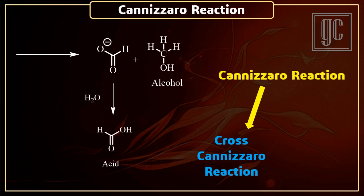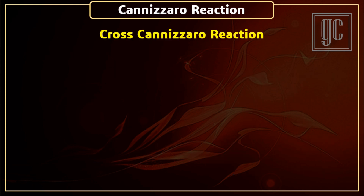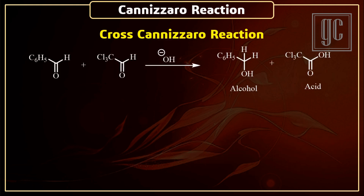On the basis of the substrate used, the Cannizzaro reaction can be classified into two categories: first is the cross Cannizzaro reaction, and second is the internal Cannizzaro reaction. When the substrates of the reaction are two different aldehydes, then the Cannizzaro reaction is known as the cross Cannizzaro reaction.